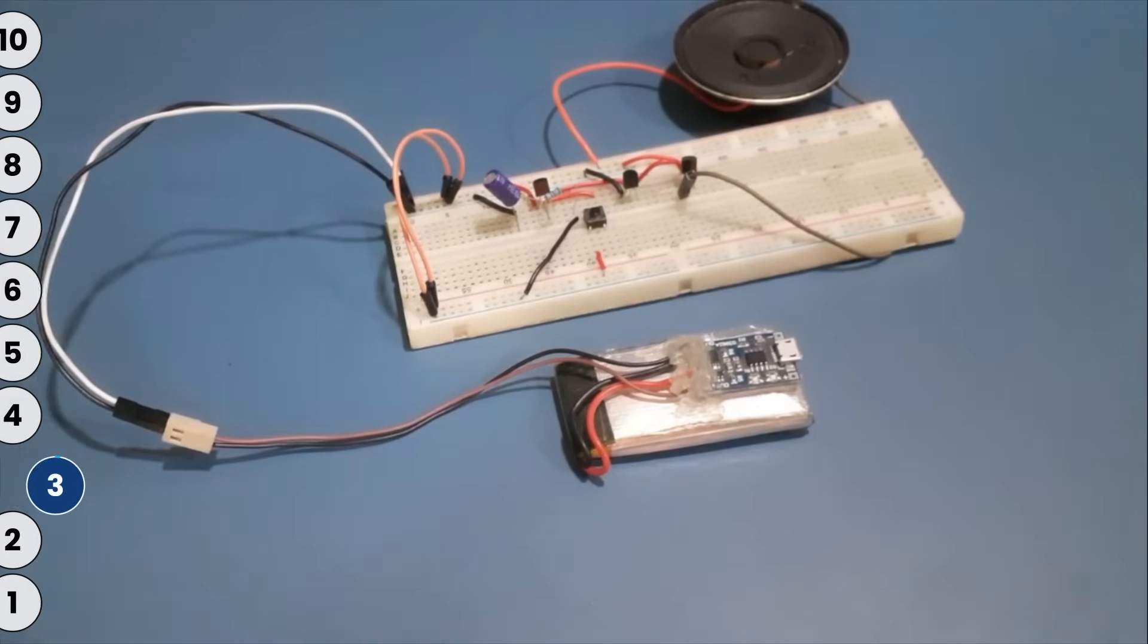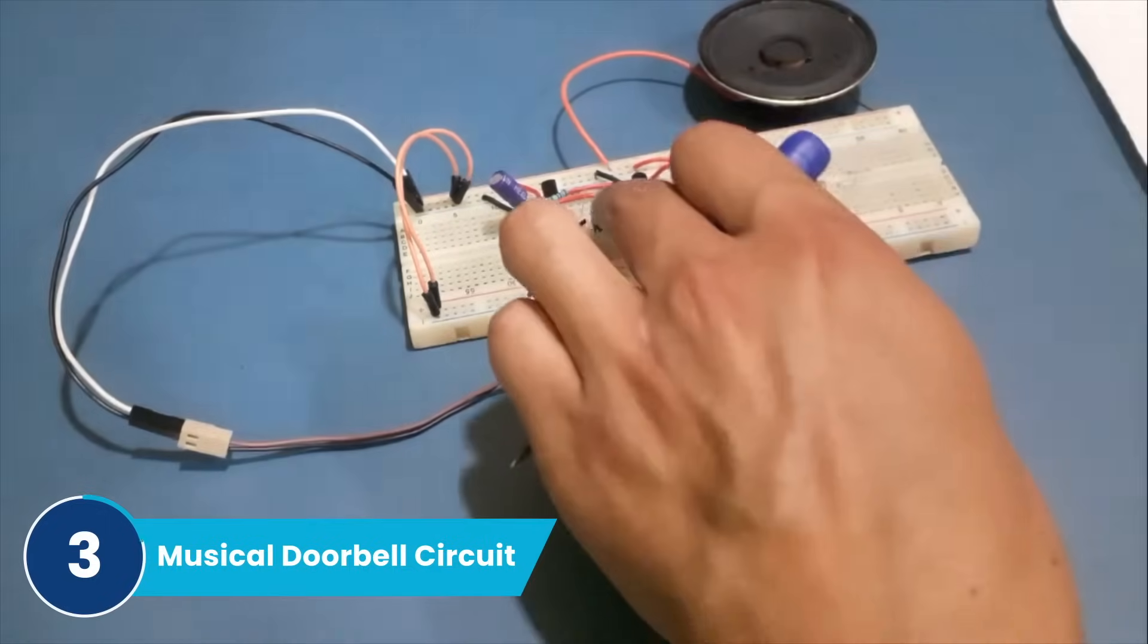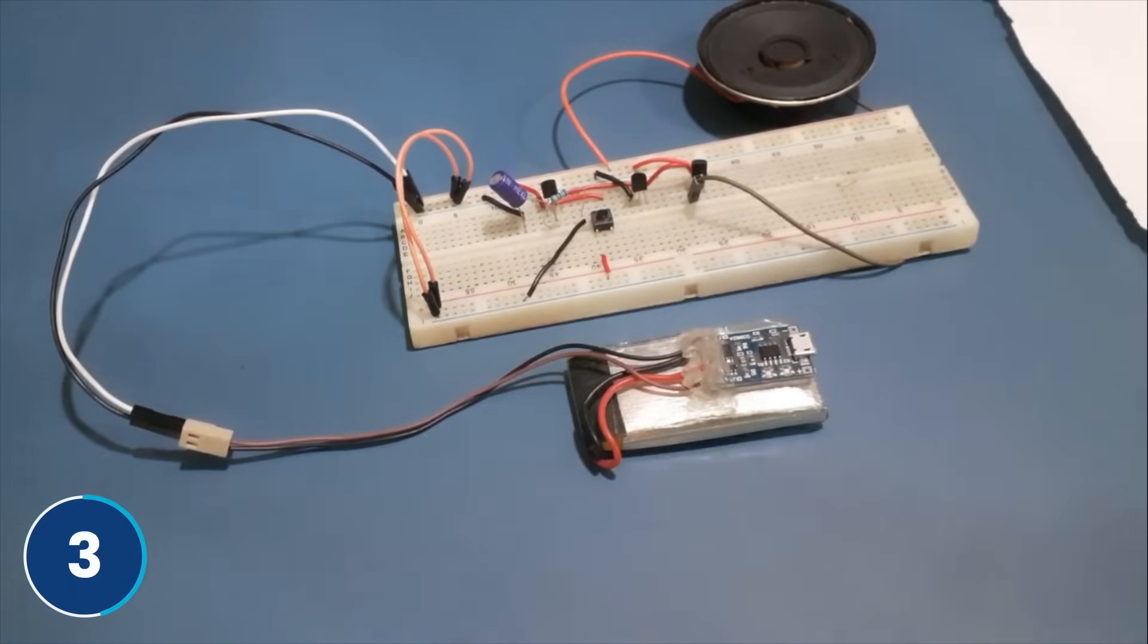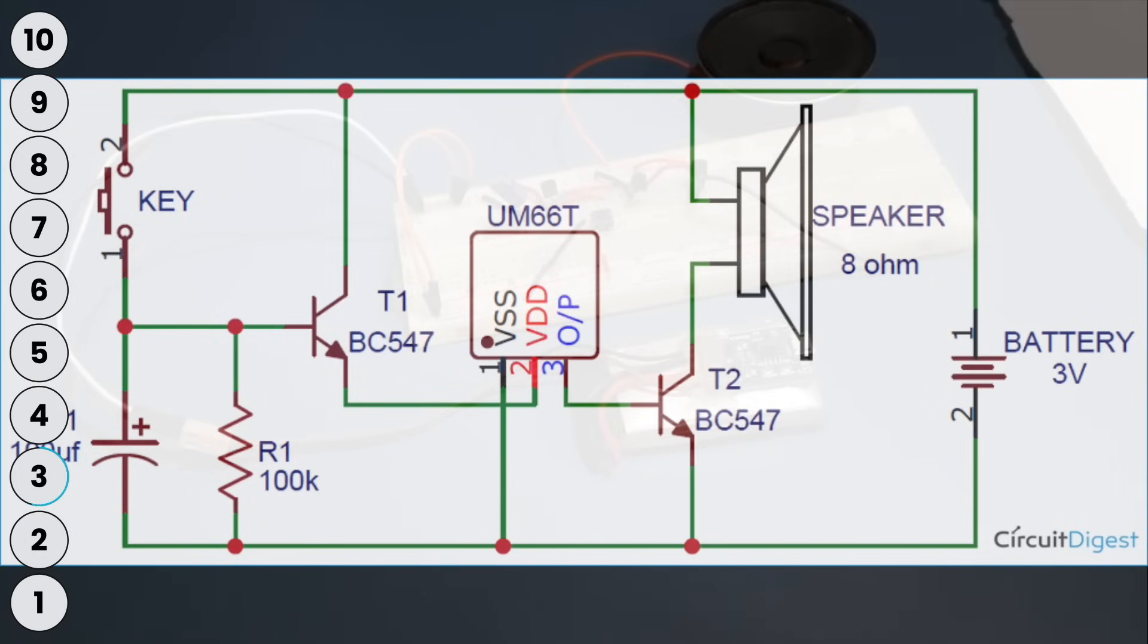Coming on at number three is a musical doorbell circuit and it does this. The circuit is based upon the UM66 musical tone IC. It is powered with a 3-volt battery and when a push button is pressed, it plays a melody on this 8-ohm speaker.